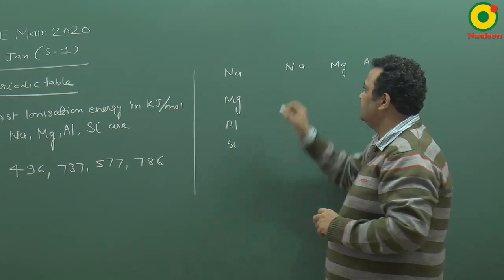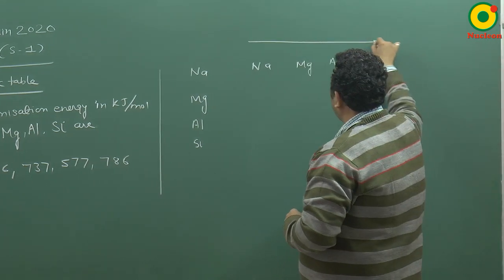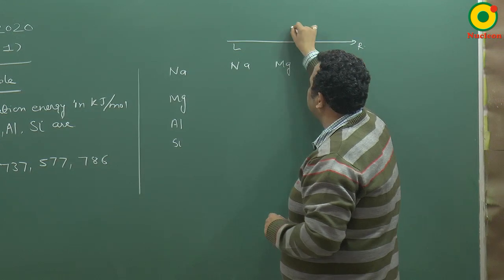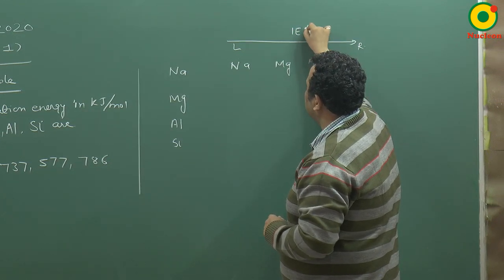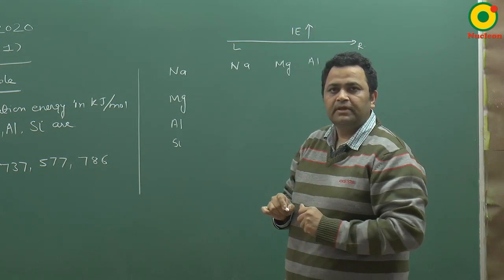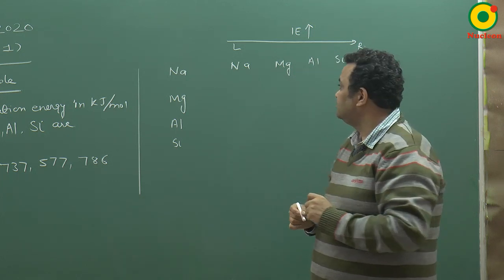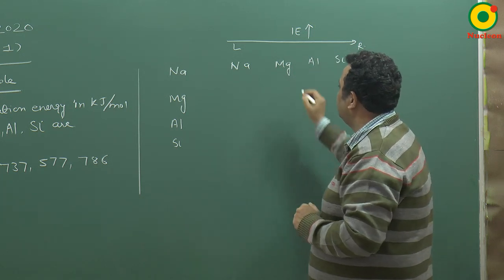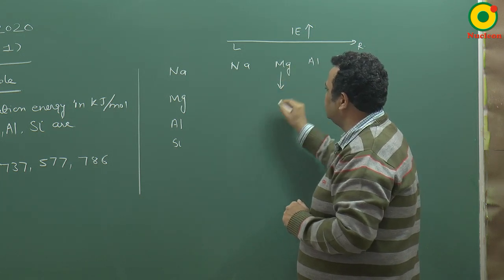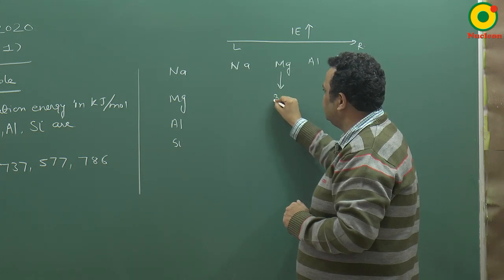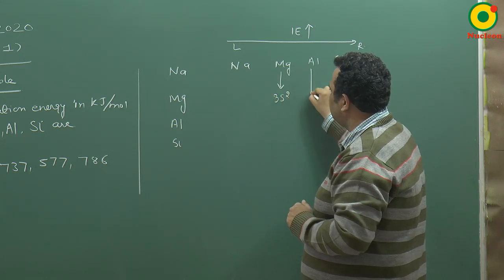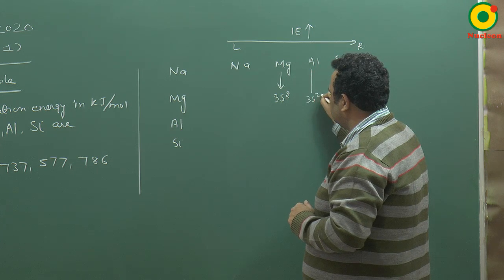So the general trend is that when we move from left to right in a periodic table, then what happens, ionization energy increases. Now, the exception comes in two places. If I look at magnesium configuration, the outermost configuration is 3s2 and this is 3s2, 3p1.